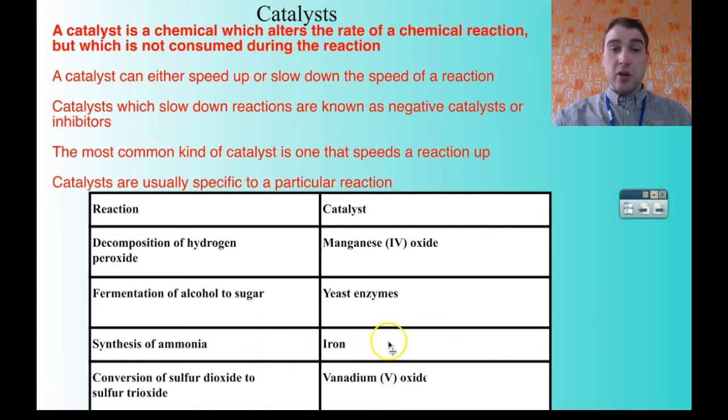A particular catalyst is specific to particular reactions. If you want to make ammonia in the Haber process, you use a finely divided iron catalyst. You couldn't use vanadium oxide to do that. Iron speeds up that reaction. Vanadium oxide speeds up the reaction of sulfur dioxide to sulfur trioxide. If you tried to switch these around, it wouldn't work. Catalysts are usually specific to particular reactions.